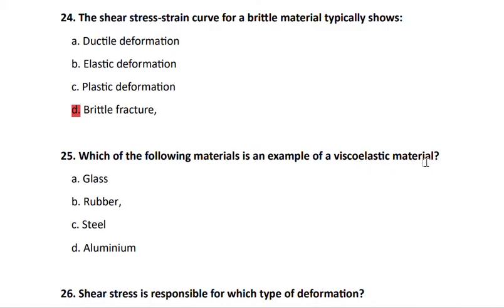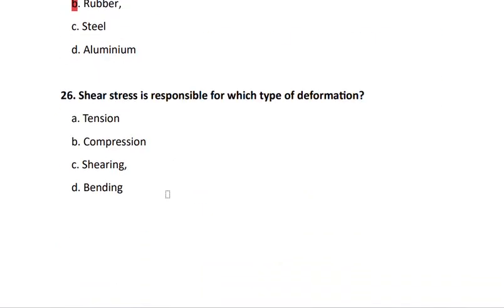Question 25: which material is an example of a viscoelastic material? Rubber is one of the best viscoelastic materials. Question 26: shear stress is responsible for shear deformation — meaning it produces shear strain.